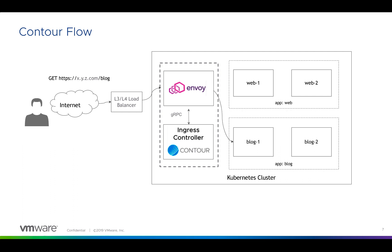Before I start the actual demo, I'll give you a high-level overview of the Contour flow. When you deploy Contour, it creates an L3/L4 load balancer for the Ingress Envoy. Ingress traffic from users flows from the internet to your load balancer, which forwards traffic to Envoy, and then Envoy reverse-proxies traffic to the backend. At a high level, Contour can be thought of as a translator of Kubernetes API objects to an Envoy configuration — it watches the Kubernetes API for ingress resources, translates them into JSON format, and serves them up to Envoy, which then directs the network traffic.